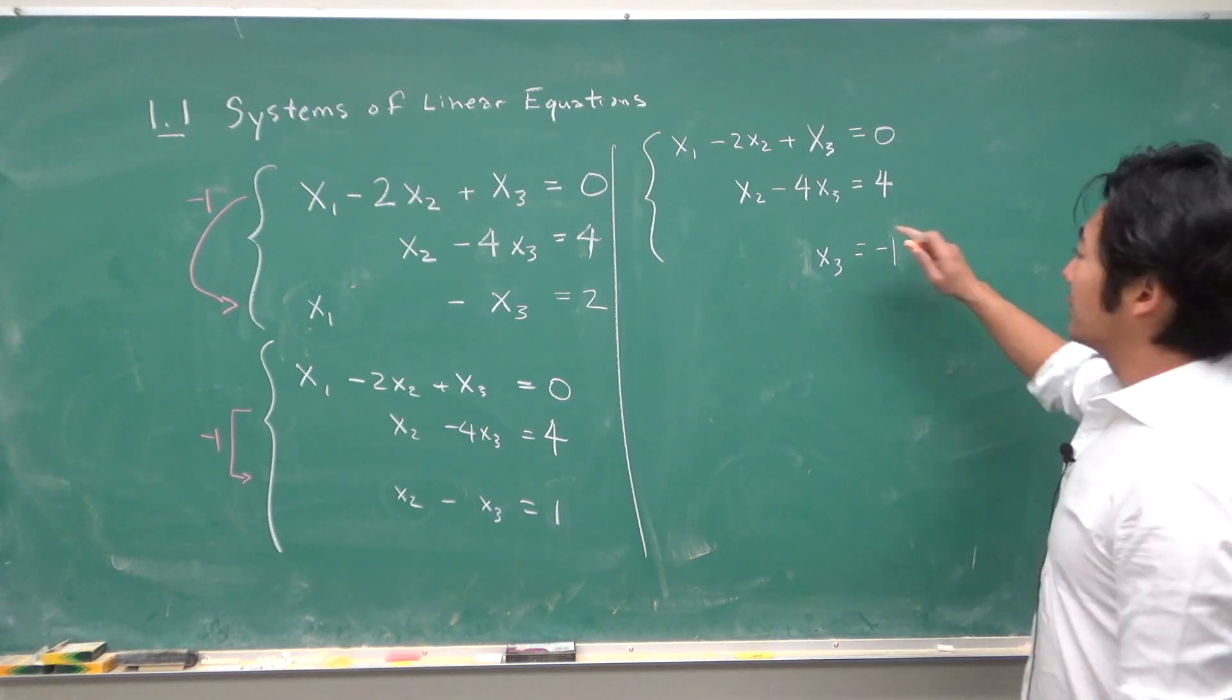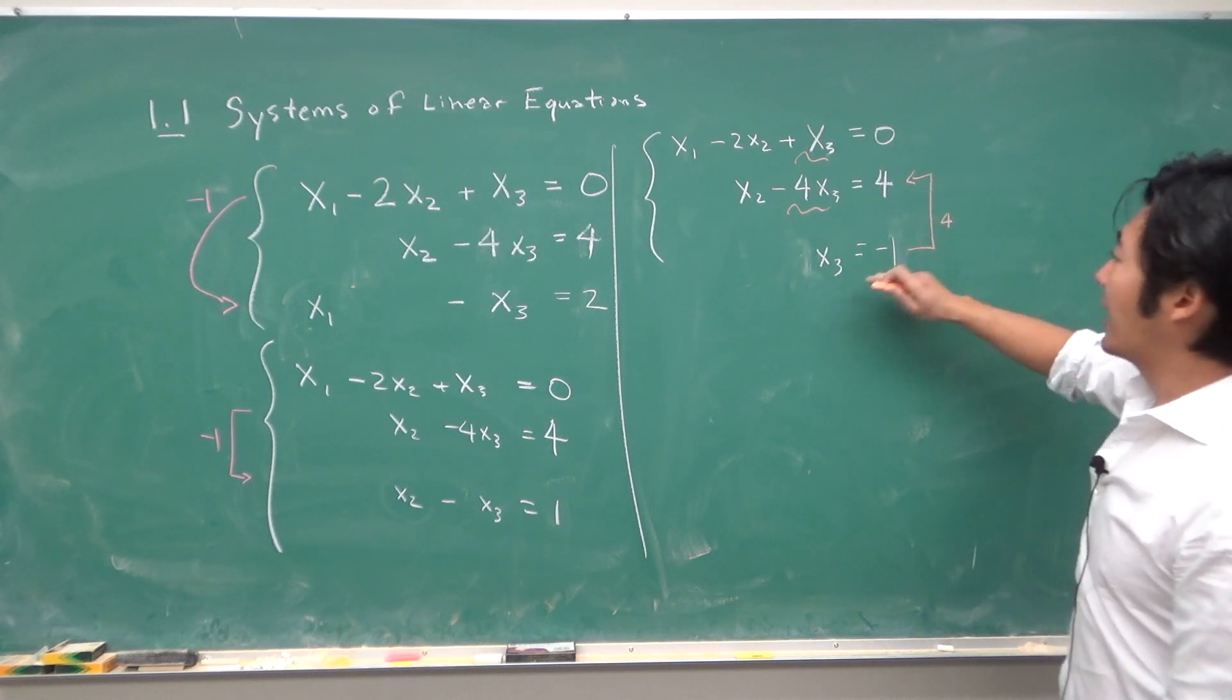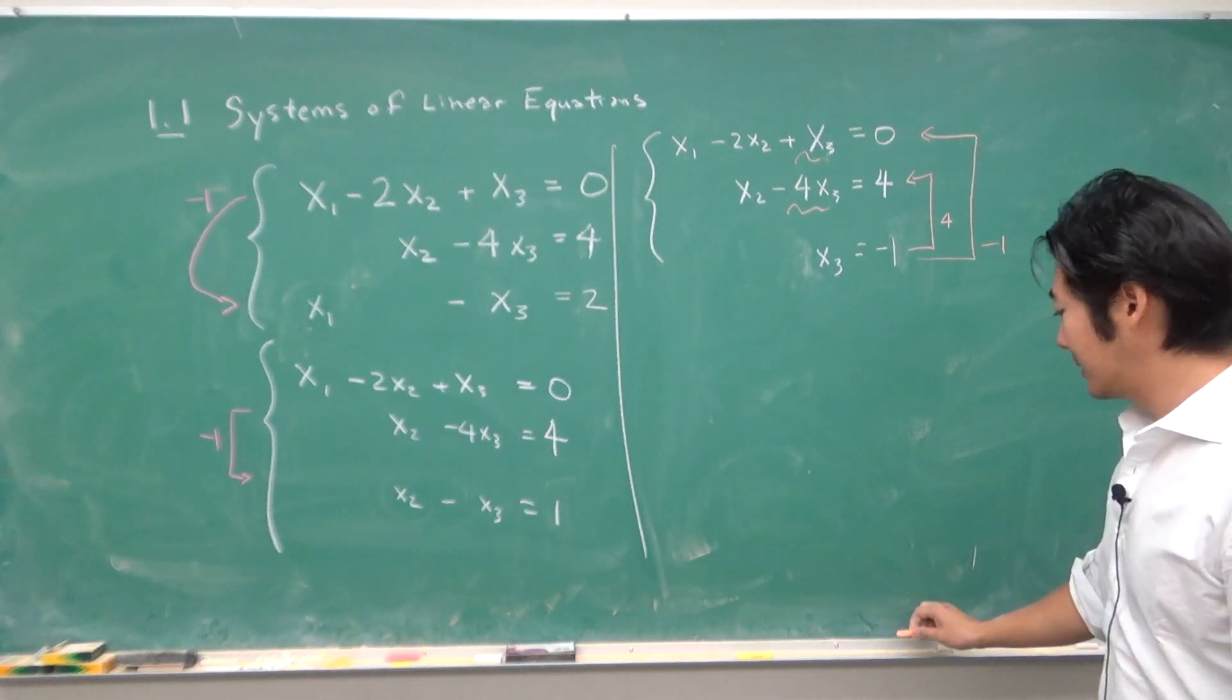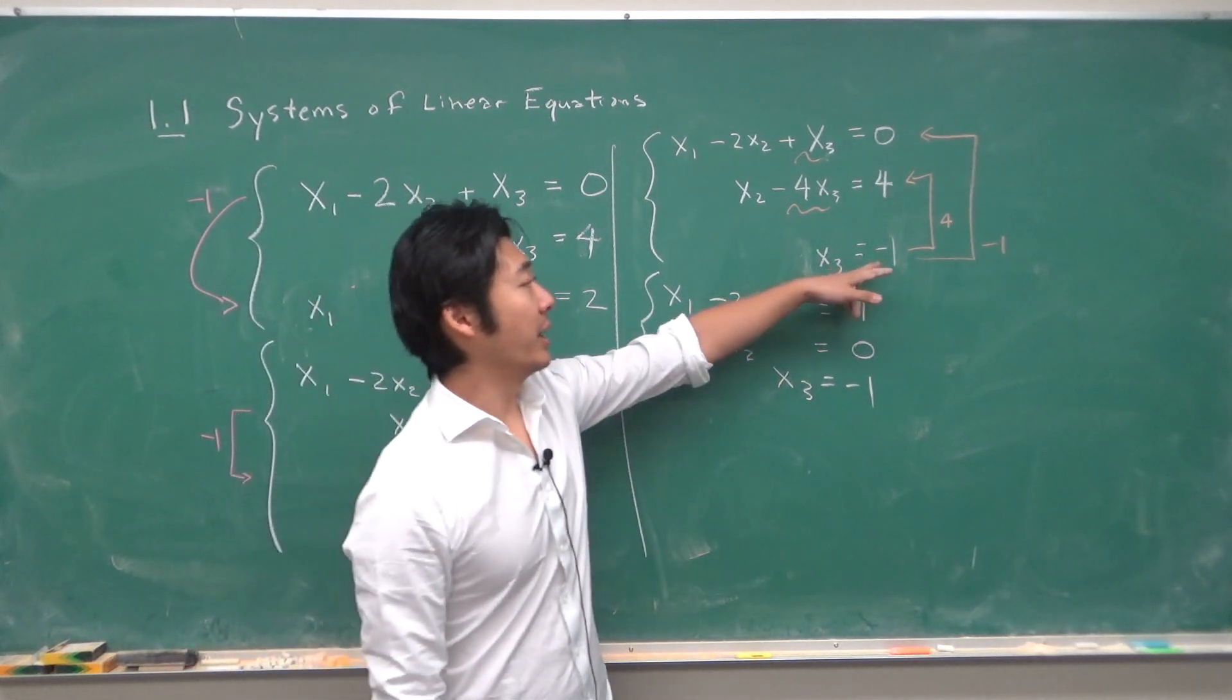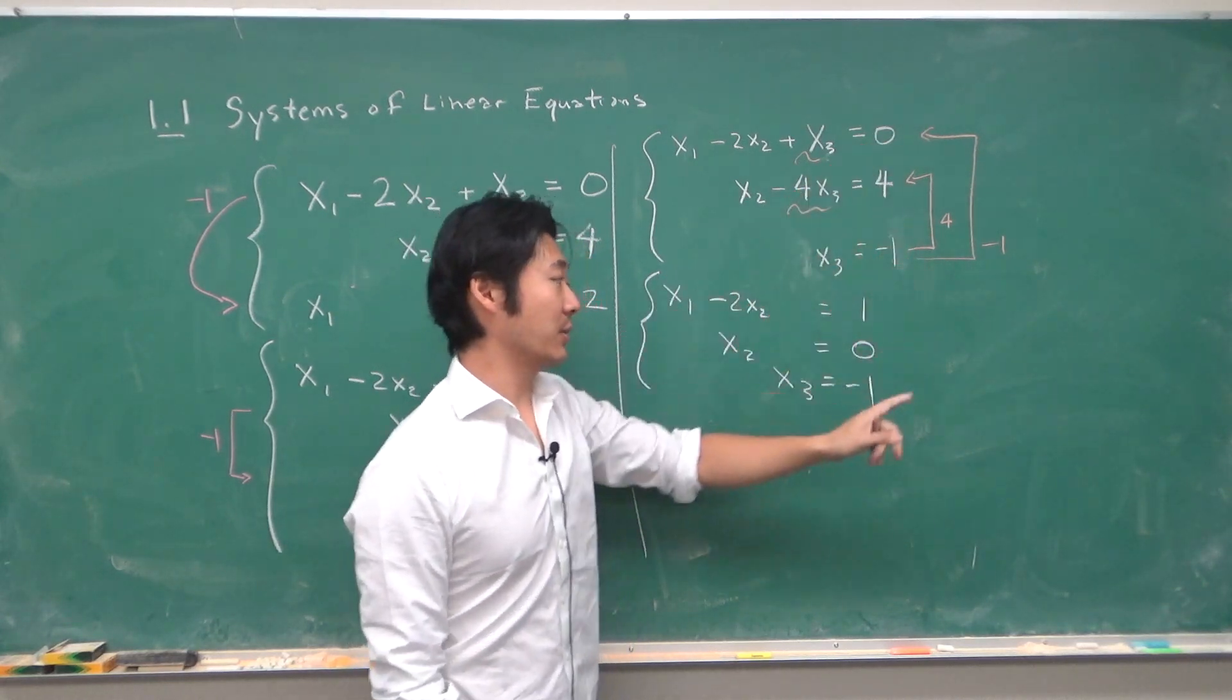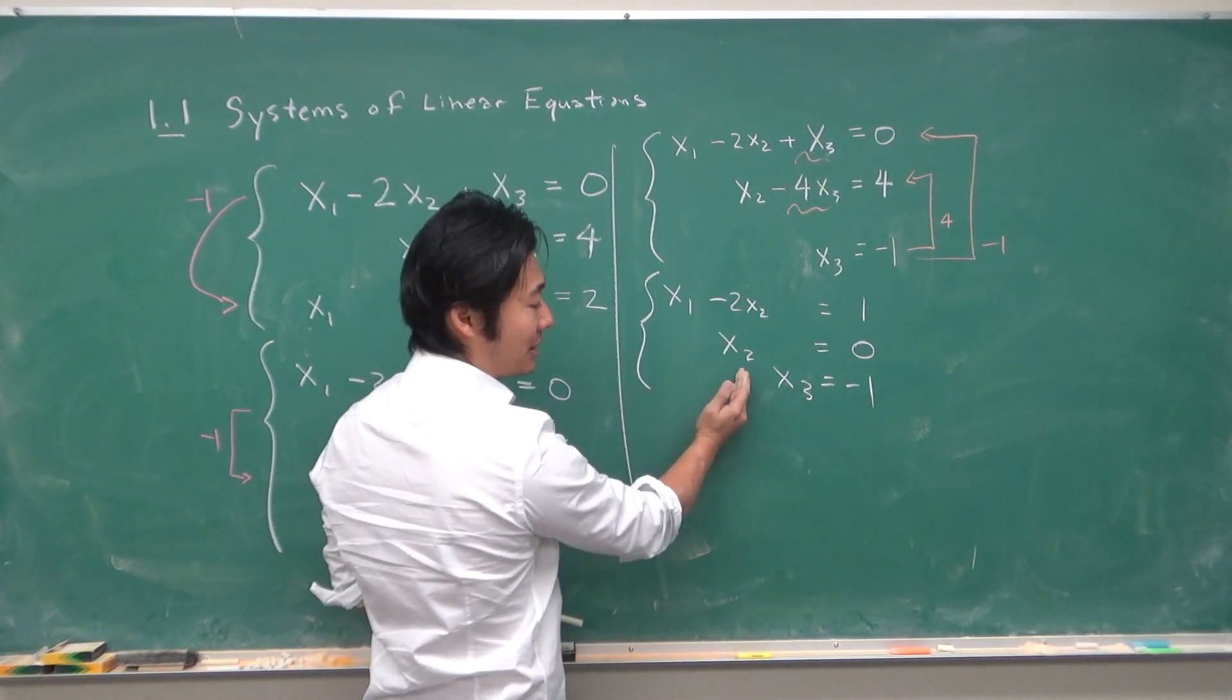Now we can keep row reducing. Let's get rid of these two. How can we do that? Well we can multiply this equation by 4 and add it into here. And then we can multiply this equation by negative 1 to get rid of this variable. So when we do that we will get this equation. Minus 4 plus 4 is 0. Minus 1 times minus 1 is 1. Plus 0 is 1. And these variables go away. Notice that nothing happens over here because we don't have an x1 and x2.